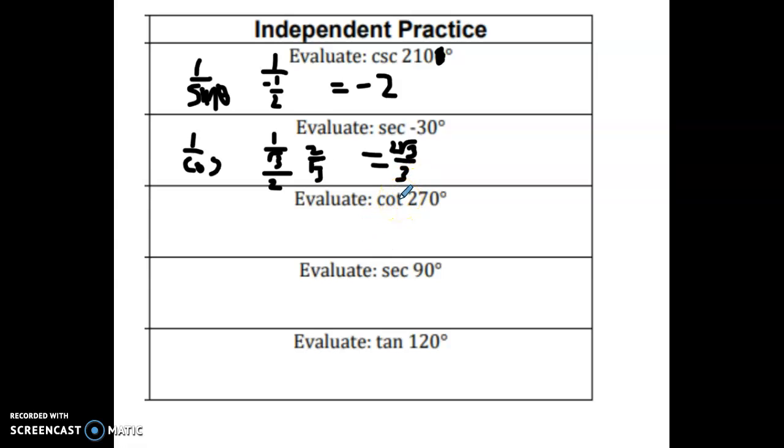The cotangent of 270, the coordinates are 0, negative 1. The cotangent is 1 over the tangent. Well, the tangent is y over x, so the inverse of that would be x over y. So it would be 0 over negative 1, which then is just 0.